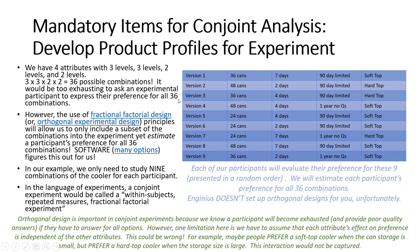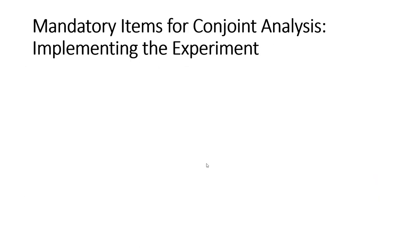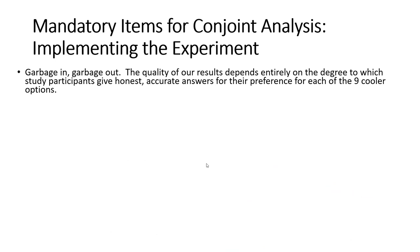Unfortunately, InGenius doesn't actually tell us exactly how to set up the reduced number of profiles when collecting data. There's a variety of software packages that will perform fractional factorial design or orthogonal experimental design for us. Finally, it's time to implement the experiment. And as always, the rule 'garbage in, garbage out' entirely applies.